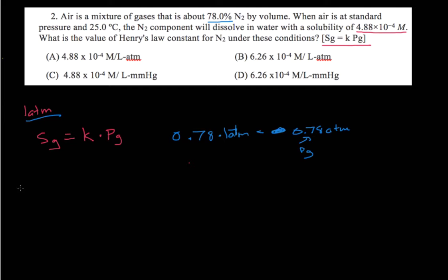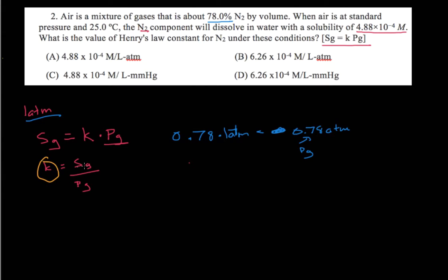Now, coming back to isolate K — K is going to equal, if we divide by the partial pressure of the gas, the solubility of the gas divided by the partial pressure of the gas, which is our N2.